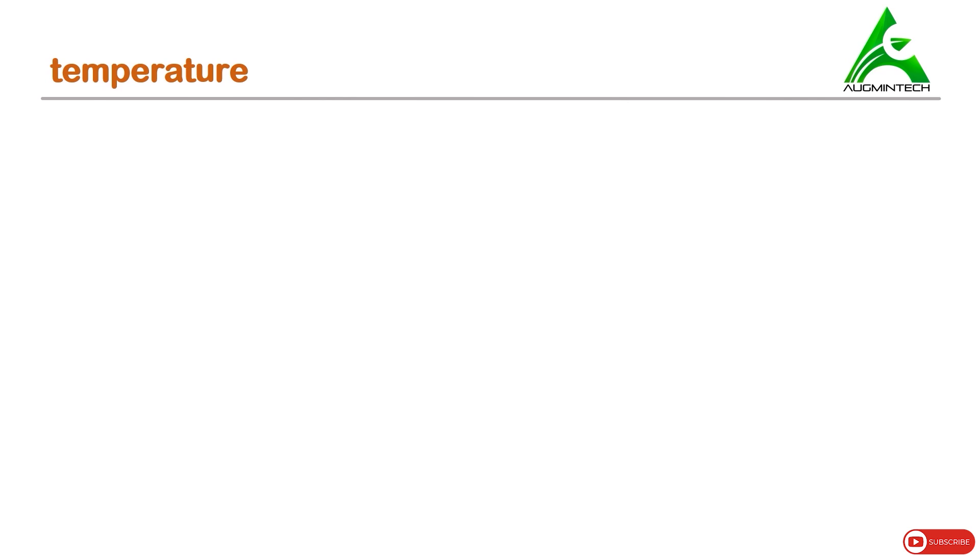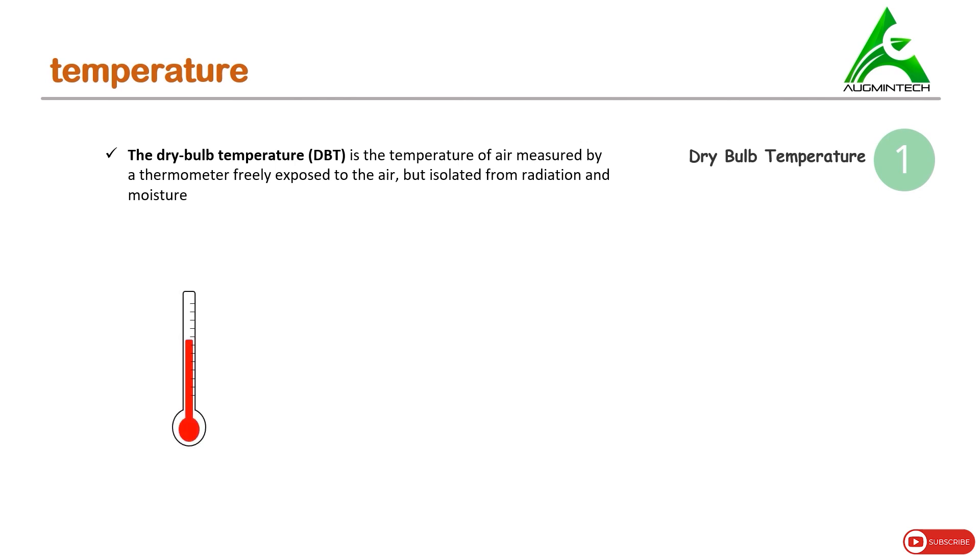The first one is dry bulb temperature. The dry bulb temperature, also known as DBT, is the temperature of air measured by a thermometer freely exposed to air. So if there is a thermometer placed in air, the reading shown is dry bulb temperature. This thermometer has to be isolated from any radiation or moisture near to it, otherwise the reading shown will not be dry bulb temperature.